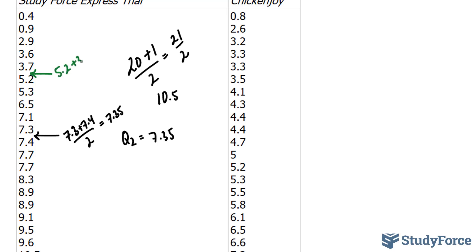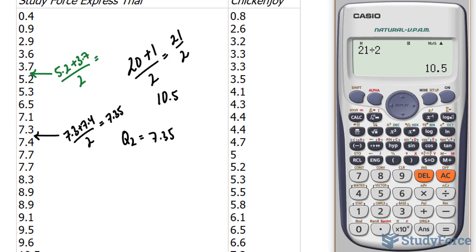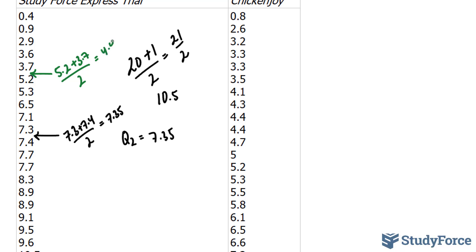5.2 plus 3.7 divided by 2. Using our calculator, 3.7, divide that by 2, and you end up with 4.45. So 4.45 represents your first quartile.